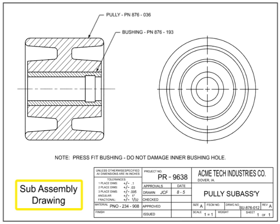Subassembly drawings are made of two or more separable items that join to form a subassembly that is then used on a higher level assembly. Subassembly drawings are useful for smaller assemblies that may go on multiple end products, such as a hydraulic valve that goes on many different tractors. One of the differences between an assembly and subassembly is that a subassembly typically has the use-on or next higher assembly called out, either in the title block or in the notes section.